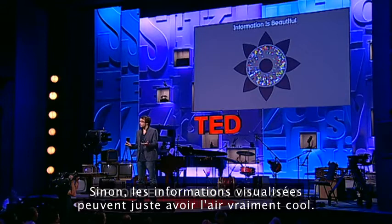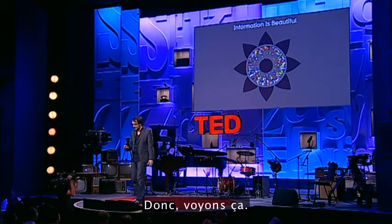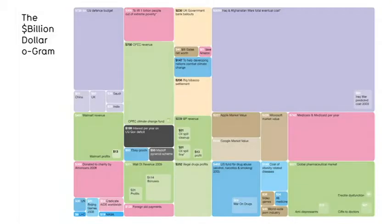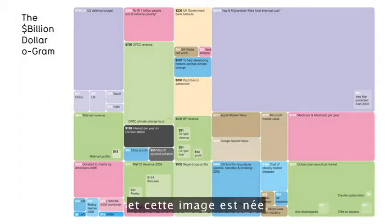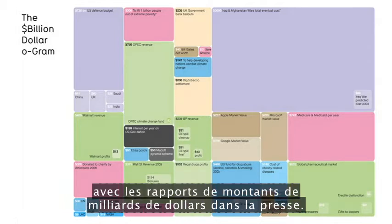Visualizing information can just look really cool. This is the billion-dollar-a-gram, and this image arose out of frustration I had with the reporting of billion-dollar amounts in the press.